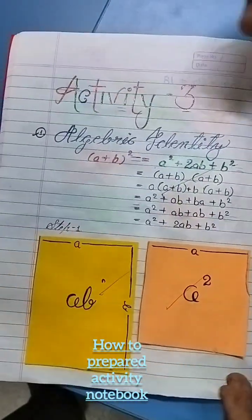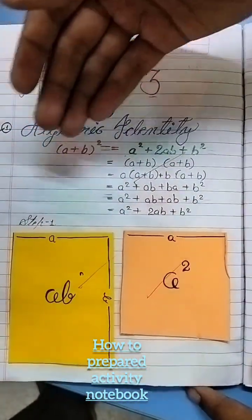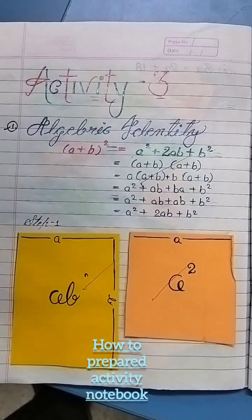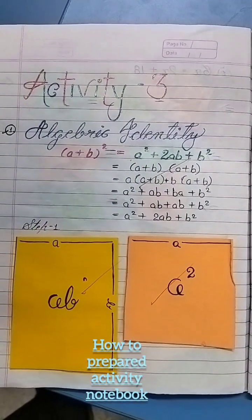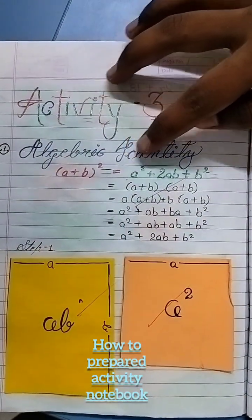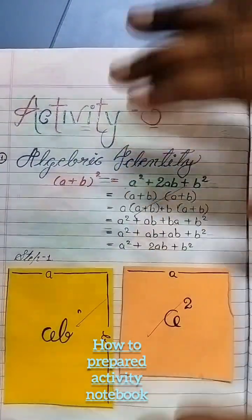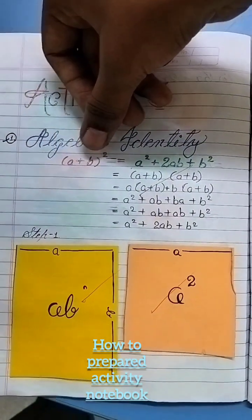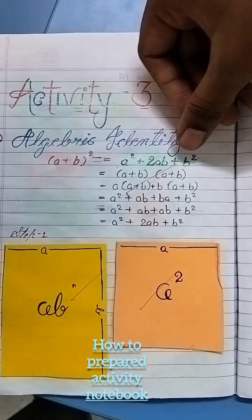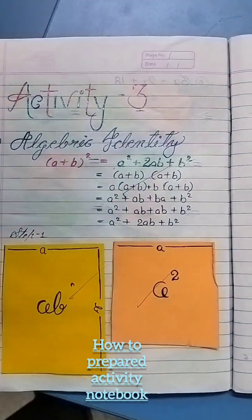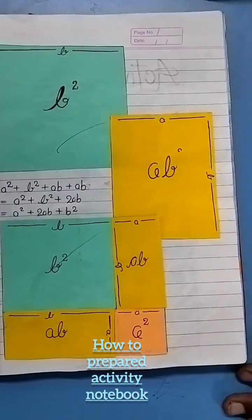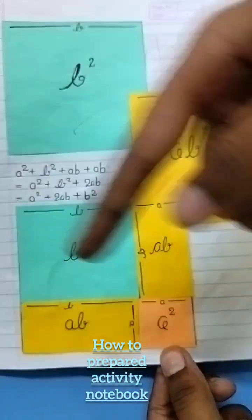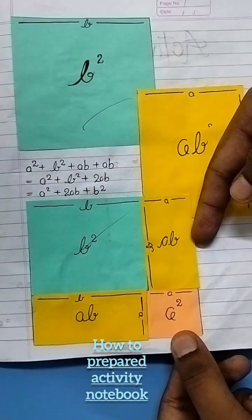The third activity is about the algebraic identity: (a + b)² = a² + 2ab + b². By doing this activity, we can find how (a + b)² is equal to a² + 2ab + b². Craft paper is used in this activity.